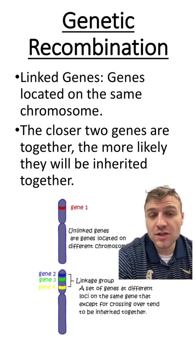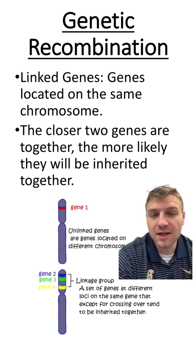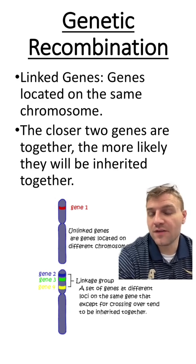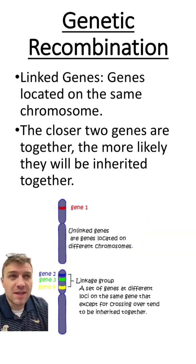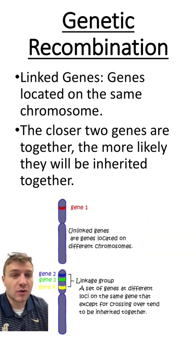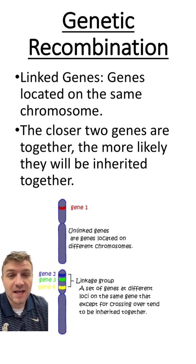Now, these specific genes are linked because they are located very close to each other on that same chromosome. This is because these genes are going to be inherited more often together than they are apart.